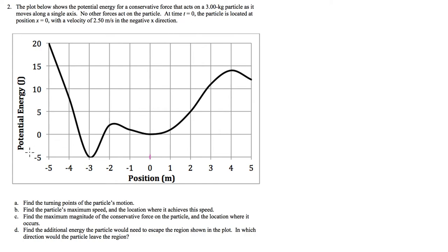And it has a velocity of 2.5 meters per second in the negative x direction. So the key thing about these plots is that the best way to handle them when you have potential energy versus position, the best way to handle them is to look at total mechanical energy. So what I'm going to do is I'm going to start with it here when it has this much kinetic energy.